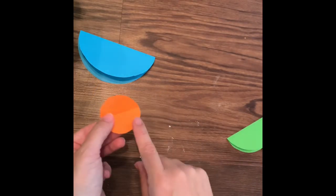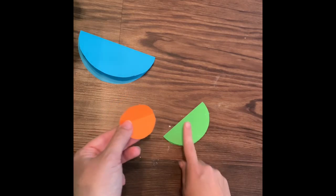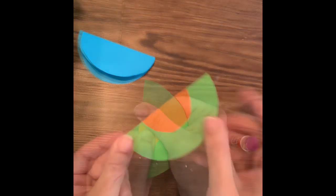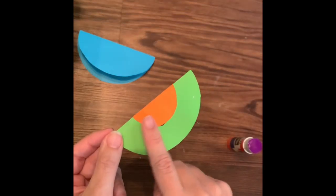Now that these are folded in half, I'm going to use my glue stick and glue my smaller circle onto my medium sized circle.